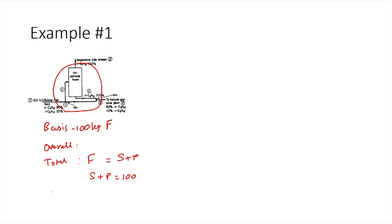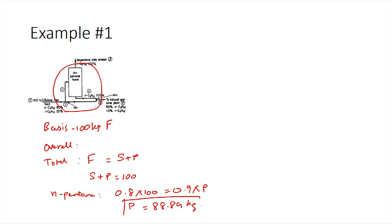We can also write an npentane balance. The npentane balance gives 0.8 times 100 as input equal to 0.9 times P as output. From this we calculate P as 88.89 kilograms, and S is calculated as 11.11 kilograms.